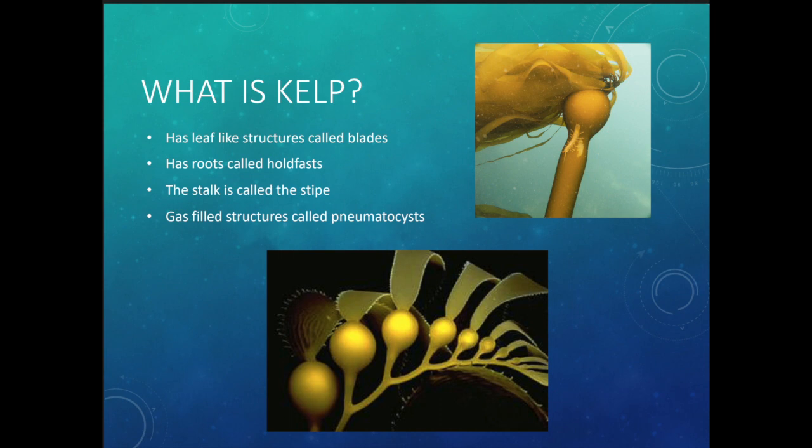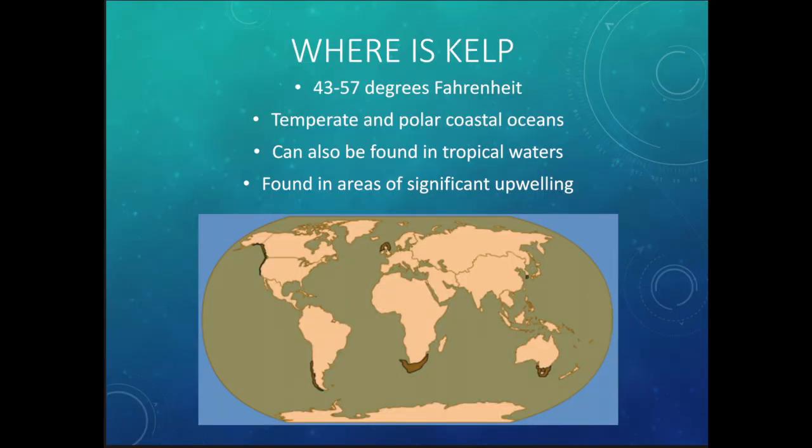You can find kelp in areas that are a bit colder — about 43 to 57 degrees Fahrenheit. They like temperate and polar coastal oceans, not the open ocean, and they prefer colder water compared to coral reefs, seagrass, and mangroves — though not as cold as the Arctic or Antarctica. Some kelp has been found in tropical waters, like Ecuador. The biggest thing about kelp is they're found in areas with a lot of upwelling, where colder, deeper water rises toward the surface. There's a lot of kelp near the coast of California.